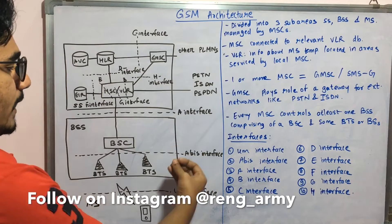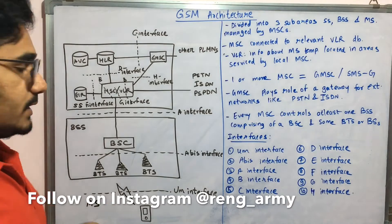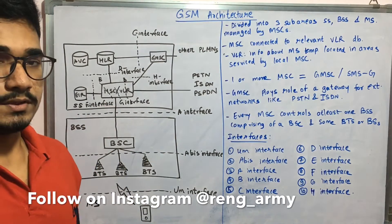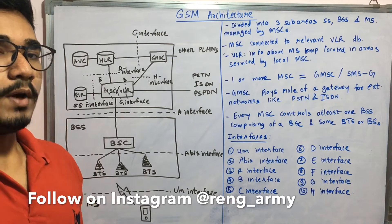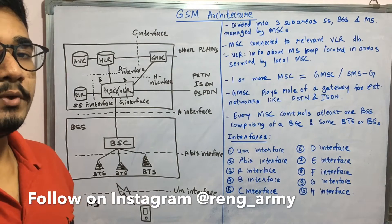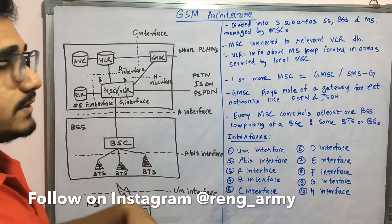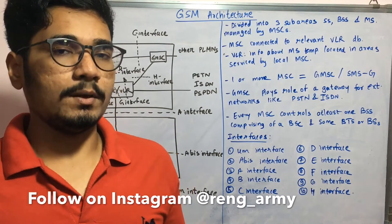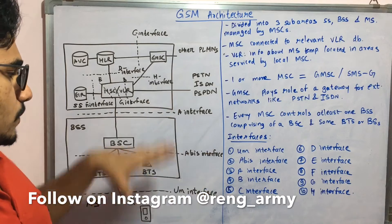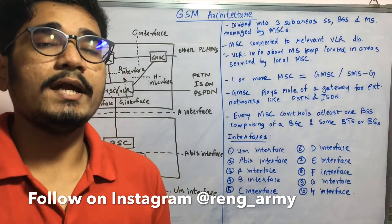Next we have the Mobile Station, which is layer three — the mobile users. When we call other people, we use the Um interface, also called the radio interface. This is the radio wave medium through which we communicate — basically the air medium where all communication happens. This interface has a couple of sub-components that we can explore in another video.